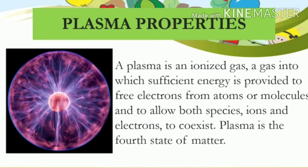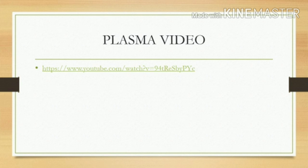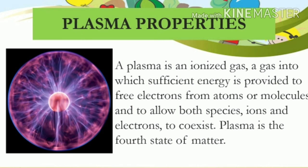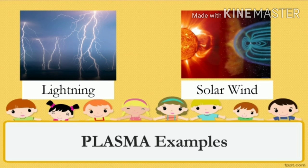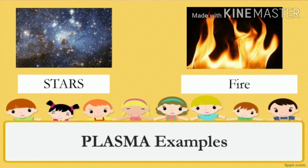Plasma properties: plasma is an ionized gas — a gas into which sufficient energy is provided to free electrons from atoms or molecules, and to allow both species, ions and electrons, to coexist. Plasma is the fourth state of matter. To know more about plasma, watch the video attached in your Google Classroom. Plasma has greater energy than the other phases of matter. If more heat is added to a gas, it eventually turns into a plasma. Examples of plasma are lightning, solar wind, stars, fire, and aurora.